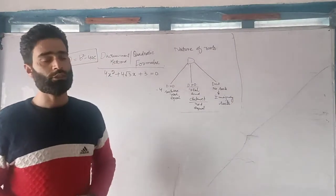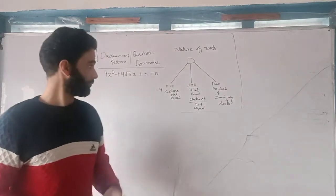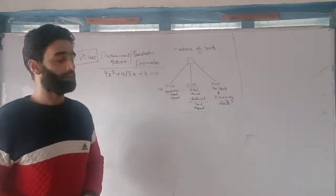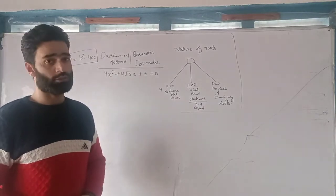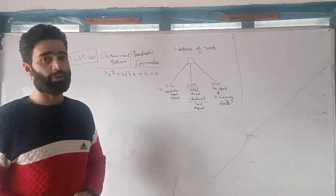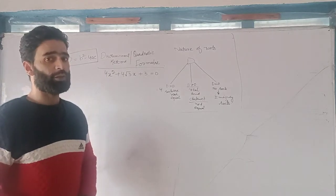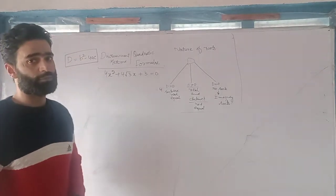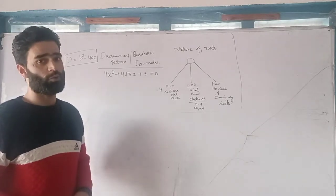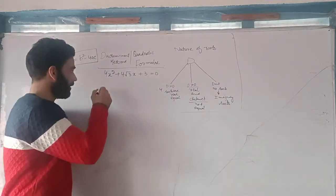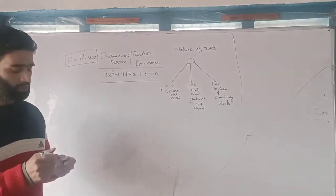Assalamu alaikum viewers, today we will discuss about the discriminant method or quadratic formula. With the help of the discriminant method we can find out the roots of a quadratic equation. We have already discussed factorization method in the last talk. Now we have another method called the discriminant method. It is very much convenient compared to the factorization method and has 100% accurate chances to find out the roots of any quadratic equation. D is equal to b square minus 4ac — this is called the discriminant.